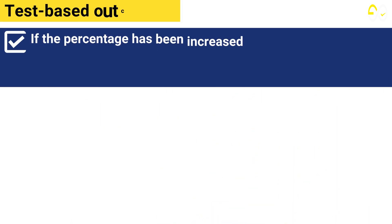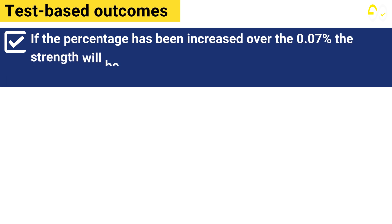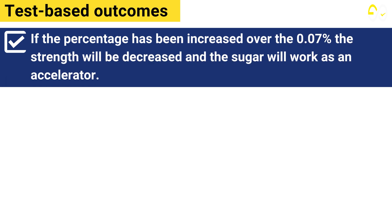If the percentage has been increased over 0.07%, the strength will be decreased, and the sugar will work as an accelerator.